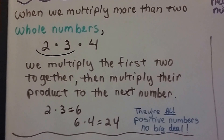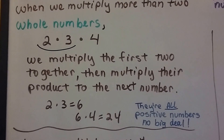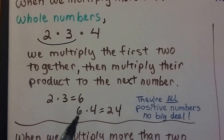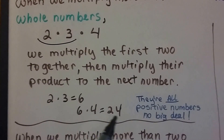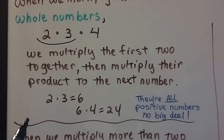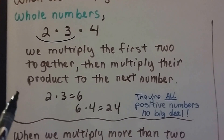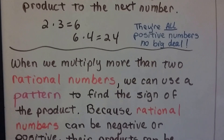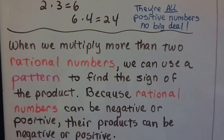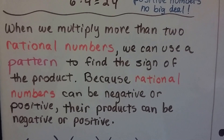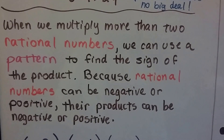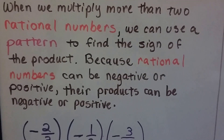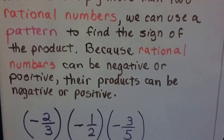Now we have to worry about negative and positive signs. With whole numbers it was no big deal: 2 times 3 is 6, and 6 times 4 is 24 — they're all positive, easy. But when we multiply more than two rational numbers, we can use a pattern to find the sign of the product, because rational numbers can be negative or positive.